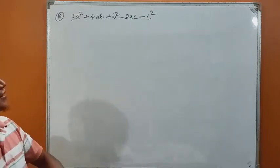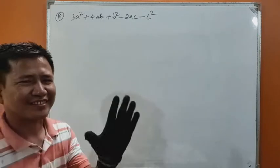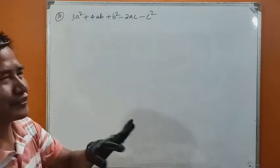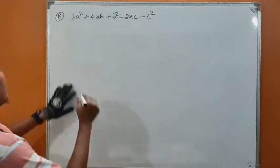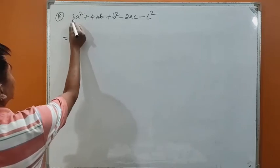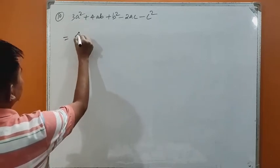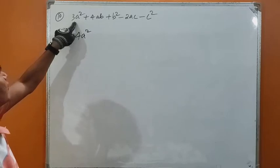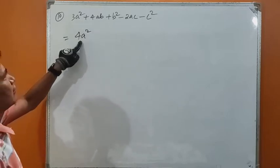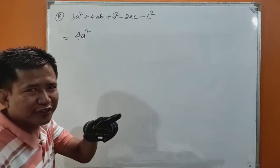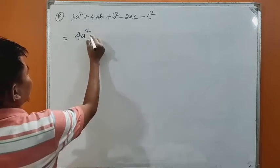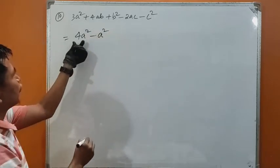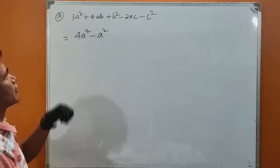Now let us do question number 10. This is a little tricky — not difficult, but a little tricky. Now, this 3a square can be written as 4a square minus a square, because 4a square minus a square is 3a square. I need to balance by introducing minus a square.